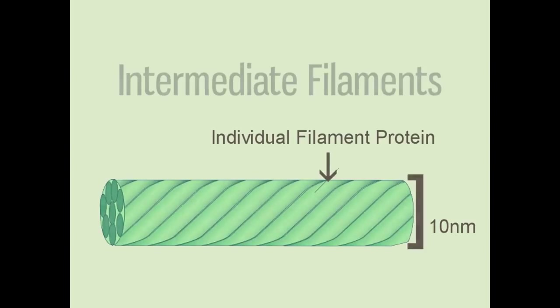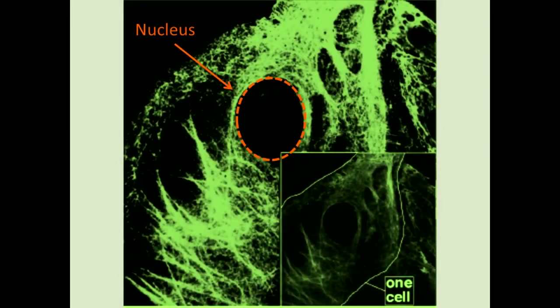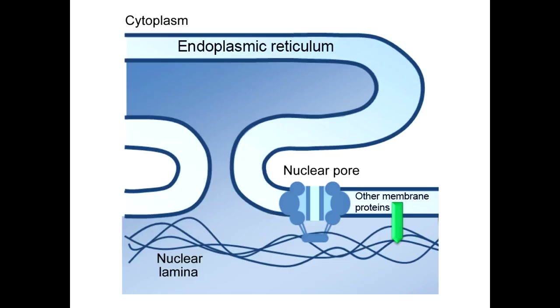The stability of intermediate filaments makes them excellent as anchors for organelles that don't need to move around, like the nucleus. In this cell, the intermediate filaments, stained green, surround the nucleus and help keep its position stable within the cell. Intermediate filaments called lamins compose the nuclear lamina, a layer of filament just inside the nuclear membrane that provides structural support and regulates some of the activities that go on within the nucleus.